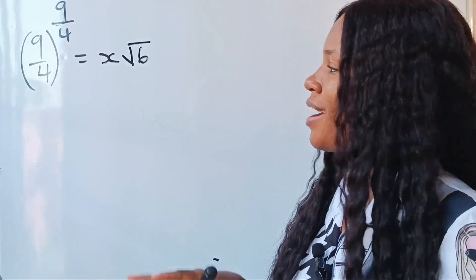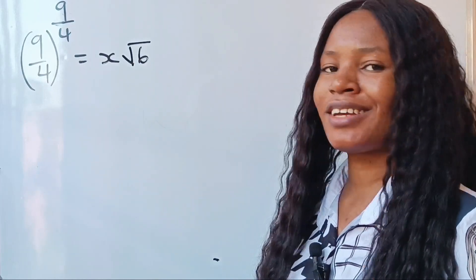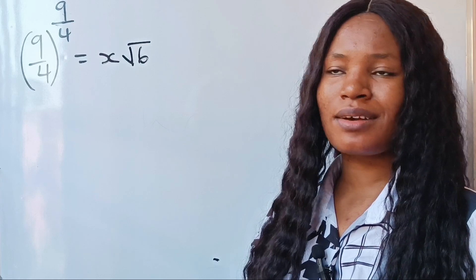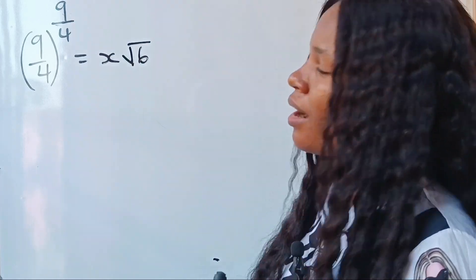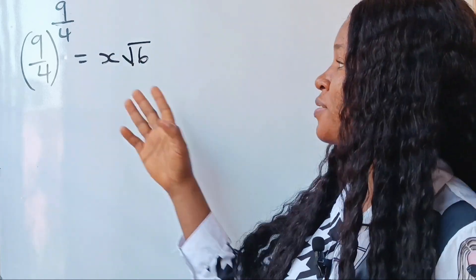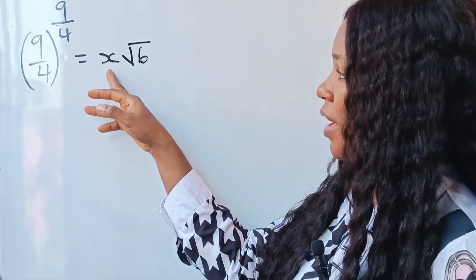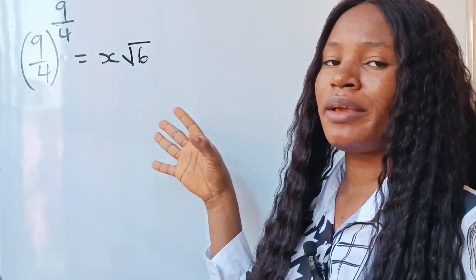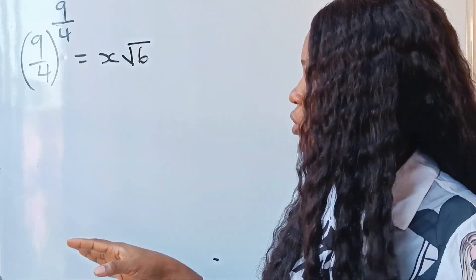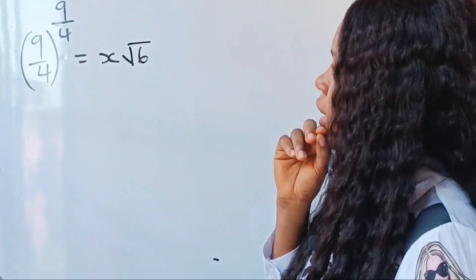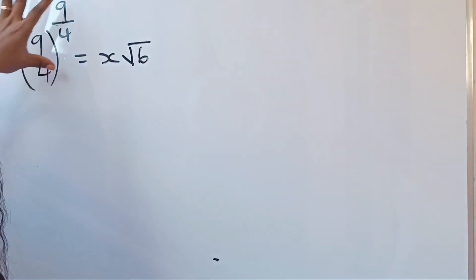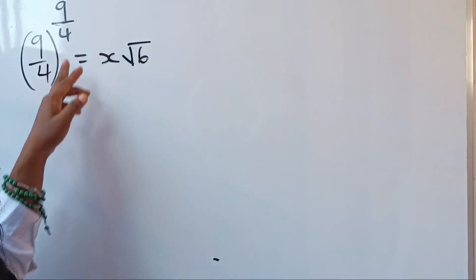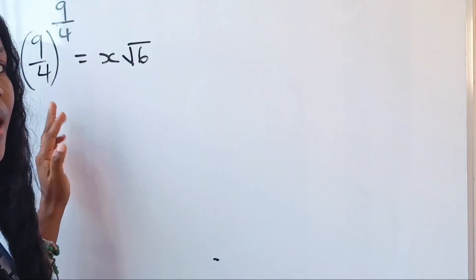Hi everyone, this is JJ Online Math Class. Welcome to today's lesson. Today we are asked to find the value of x in this particular Olympiad equation. The first thing is, let's simplify this particular question — the left hand side.